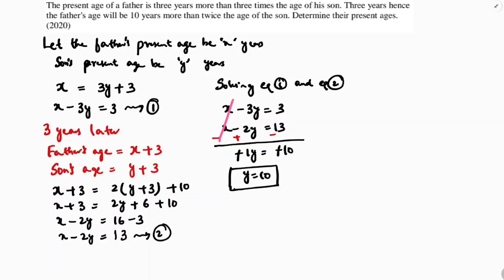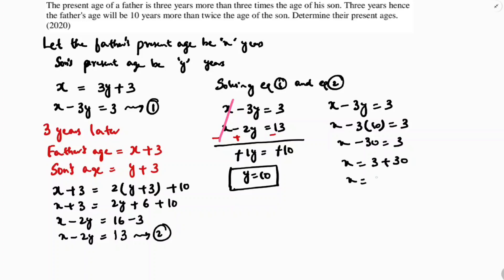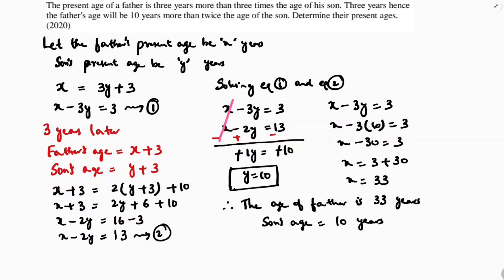Substituting y equals 10 into the first equation: x minus 3 times 10 equals 3, so x minus 30 equals 3, giving x equals 33. Therefore, the father's age is 33 years and the son's age is 10 years.